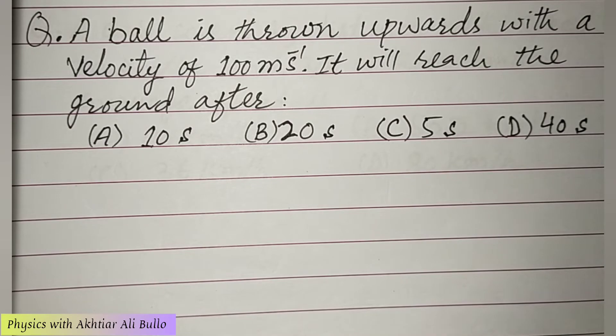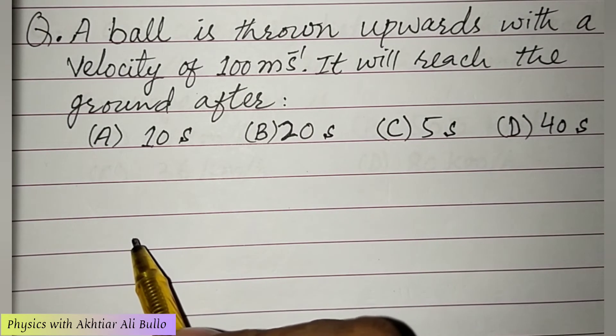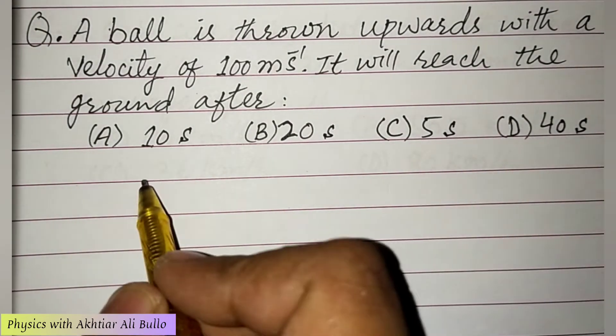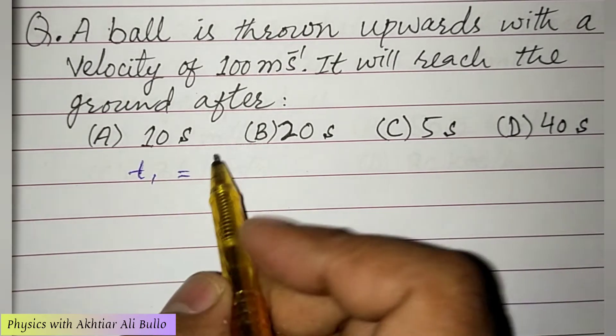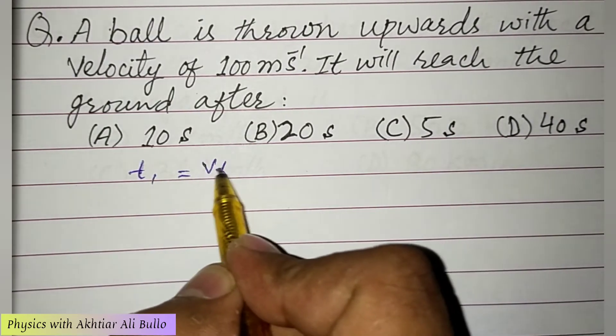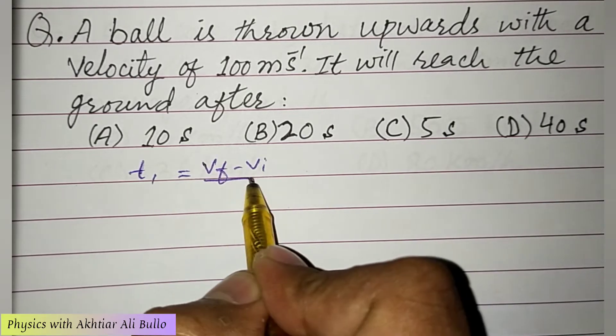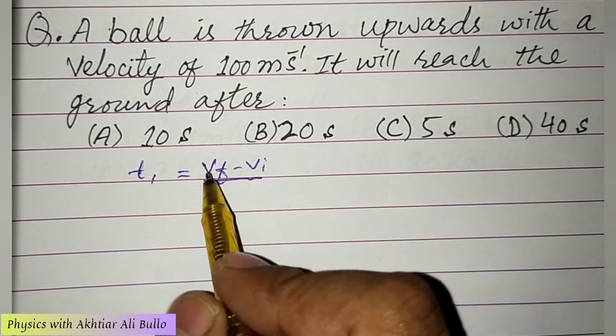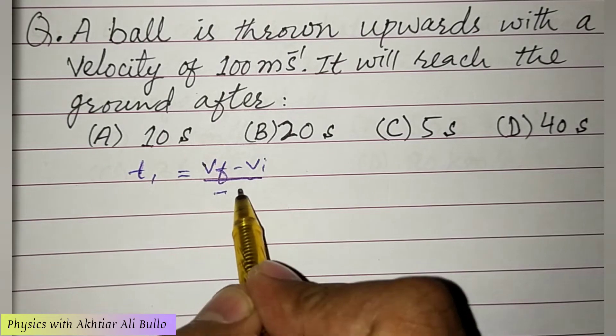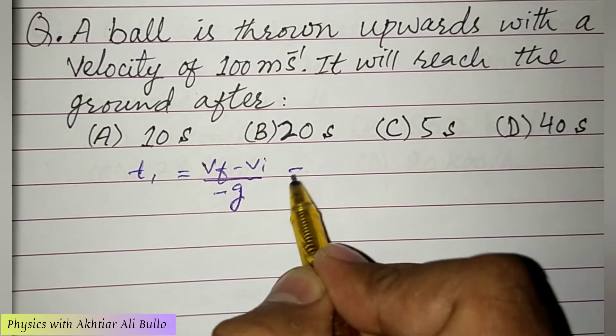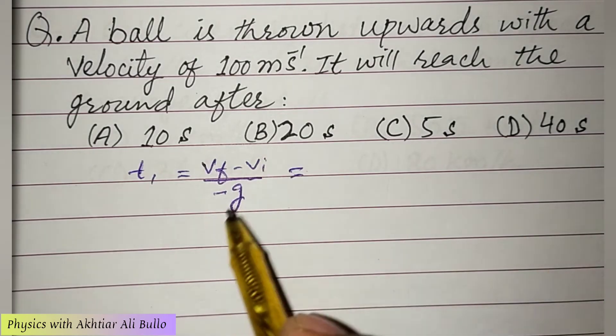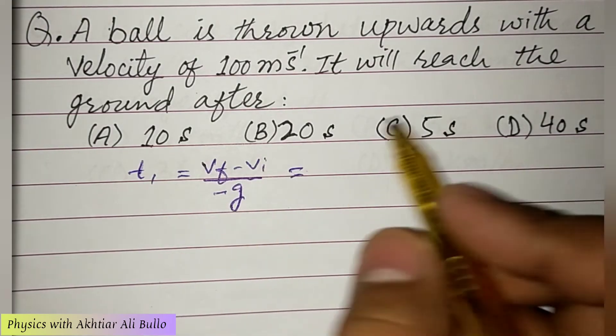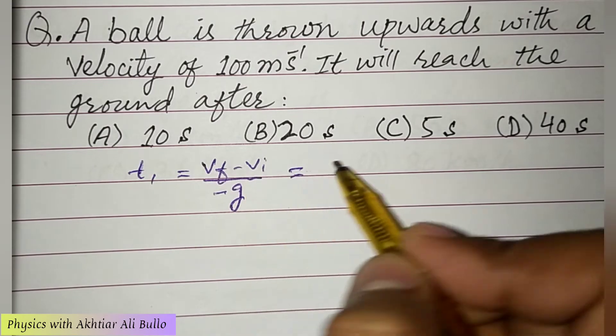The time for upward motion t1 is calculated by using the formula t = (vf - vi)/g. When ball is thrown upwards, then we will take g as negative, so the vf is 0.